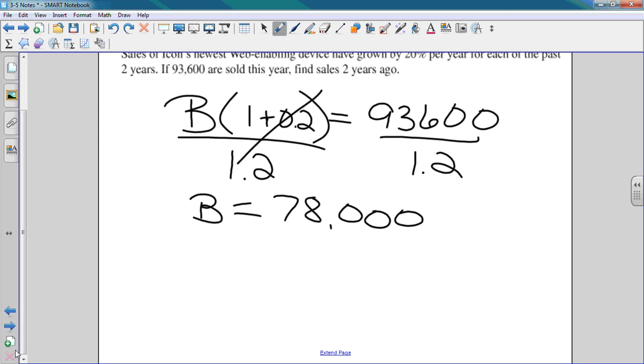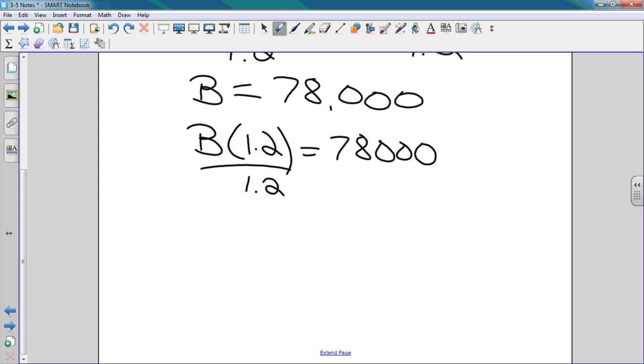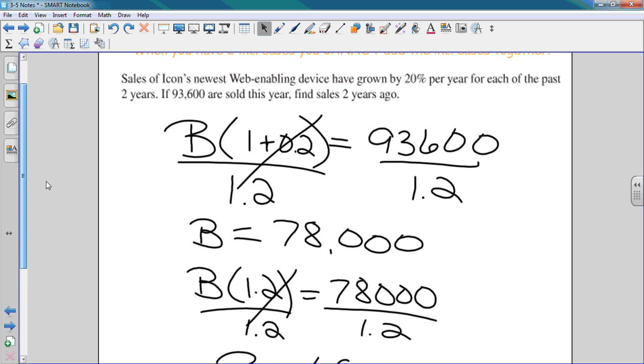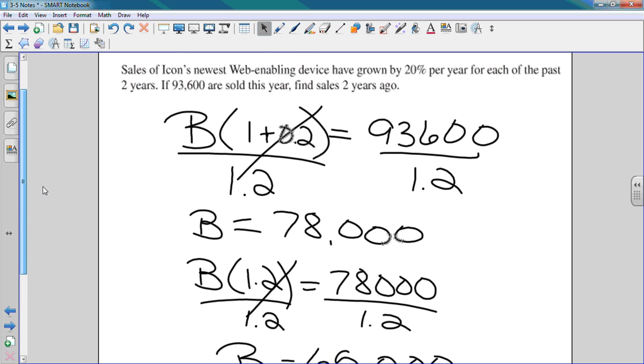I have to divide that number by 1.2 as well. This is a 20% increase again. So I'm going to take 78,000 divided by 1.2, which equals 65,000. So two years ago, they sold 65,000 web-enabling devices.